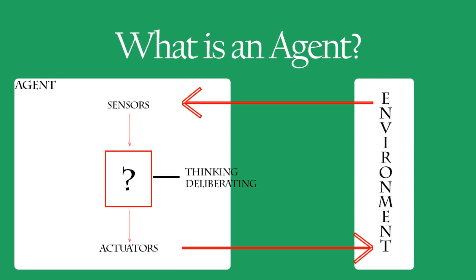In terms of a human, the percept sequence is stored in memory somewhere in the brain. On a software system, we may set up a database to save the percept sequence to refer to whenever we get a new perceptual input. So an agent's behavior is described by an agent's function that maps any given percept sequence to an action, and that map would be stored in a tabular way. Let's look at a small example of a robot vacuum to discuss that further.